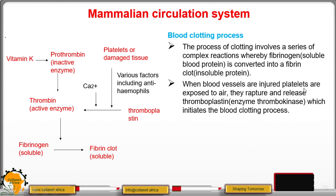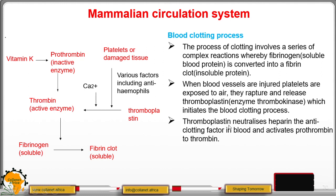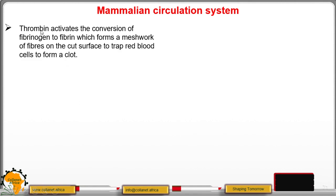When blood vessels are injured, platelets are exposed to air and burst to release thromboplastin. This enzyme neutralizes heparin, the anti-clotting factor in blood, and activates prothrombin into thrombin. This process requires the presence of calcium ions and vitamin K.